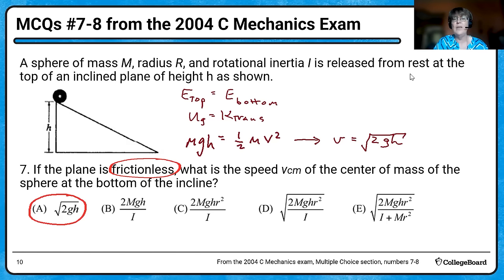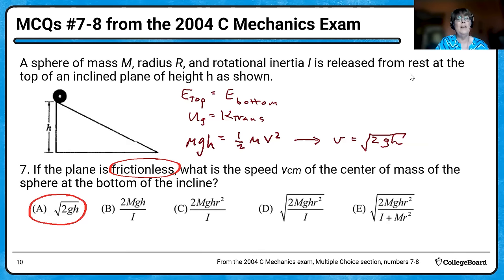Don't be bothered if they give you more information than you need. They told you what the rotational inertia is, gave you the mass and the radius, and none of it mattered. It was all about the gravitational acceleration and how high you were up the incline vertically.